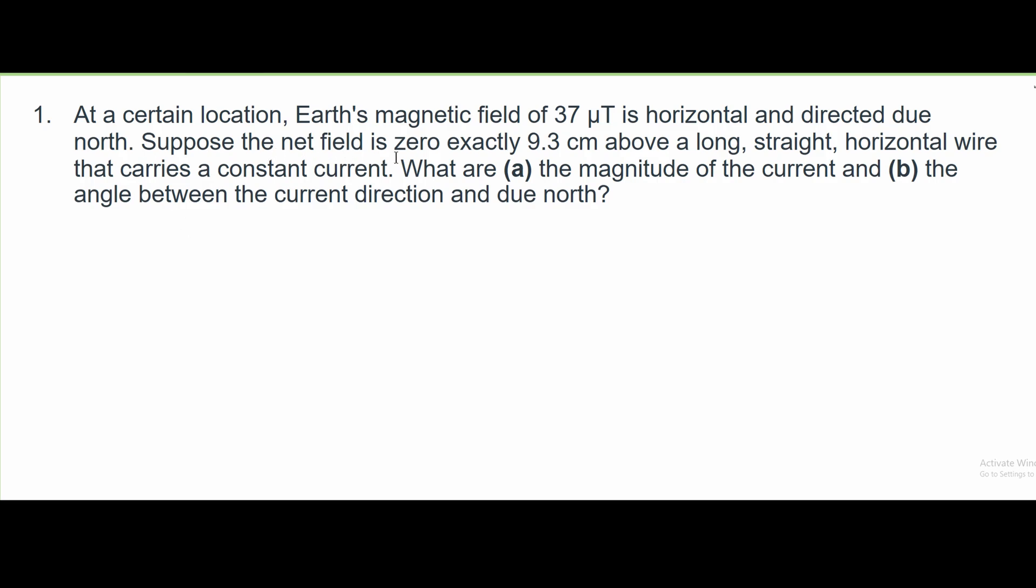At a certain location, Earth's magnetic field of 37 microteslas is horizontal and directed due north. Suppose the net field is zero exactly 9.3 centimeters above a long straight horizontal wire that carries a constant current.